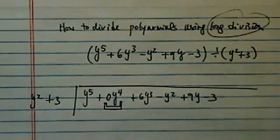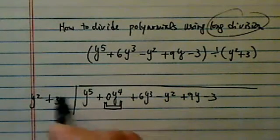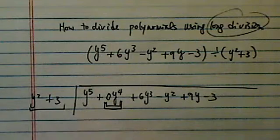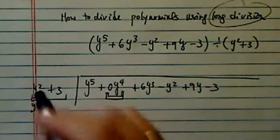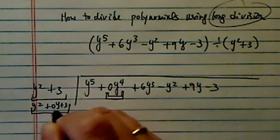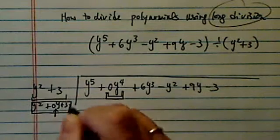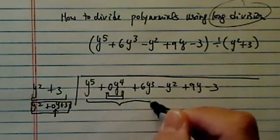Now this problem is a little different than most of the problems, it's a little more difficult in that we're missing a term. Not only that, we're missing a term over here. So this one is actually y squared plus zero y plus 3. The reason I'm writing a zero y here is just to show you that I actually need to take three terms at a time.